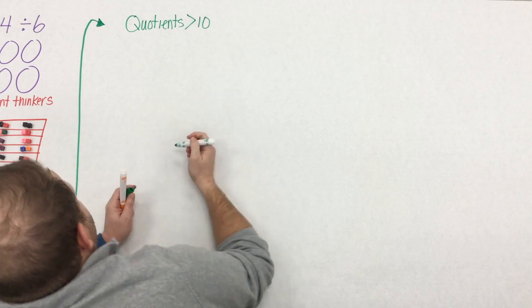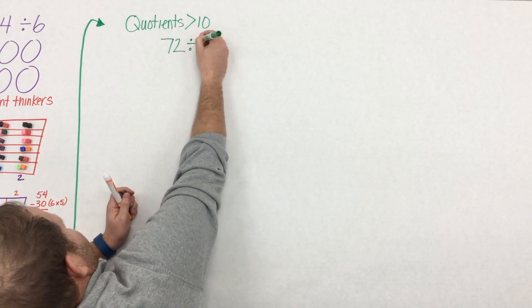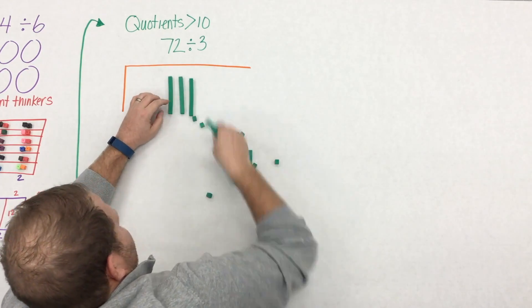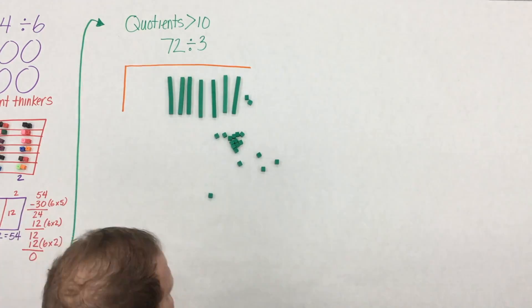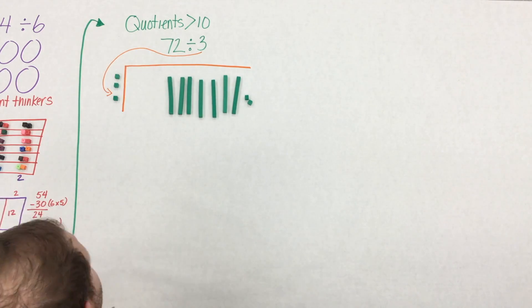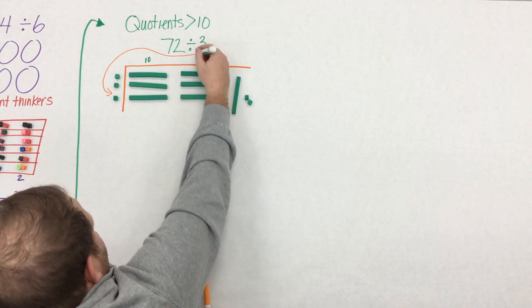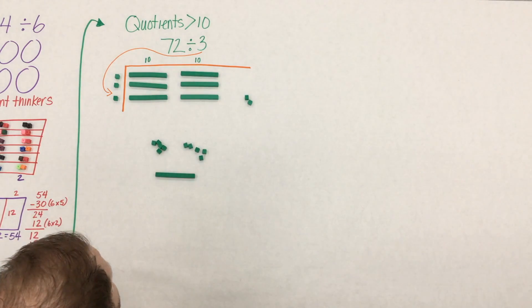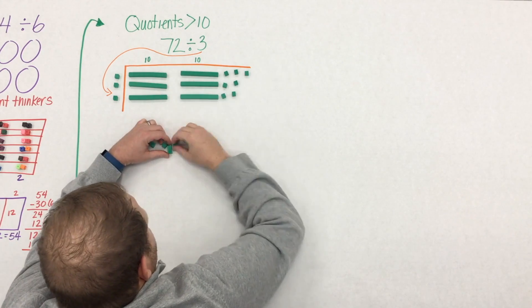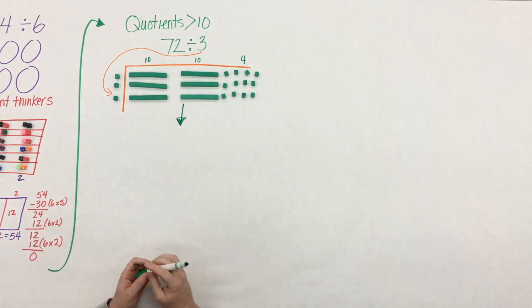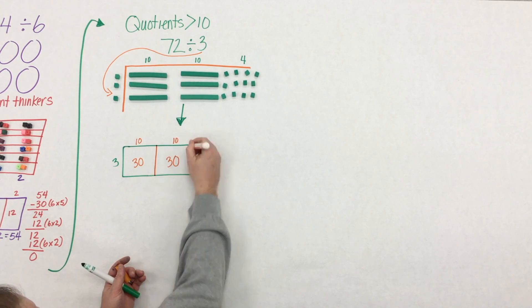As students begin to explore again in third grade, they deal with quotients which are greater than 10. Here students might begin to explore the idea of division with base 10 blocks. So they'll start with 72, and instead of putting it into three groups, they'll put it into three rows. They'll start by placing 10 in each row, then 10 in each row, and then they have that 10. And in order to place it in each row, they need to decompose it, make a fair trade. So you can see that when we take 72 and we divide it into three rows, we have 24 in each row.